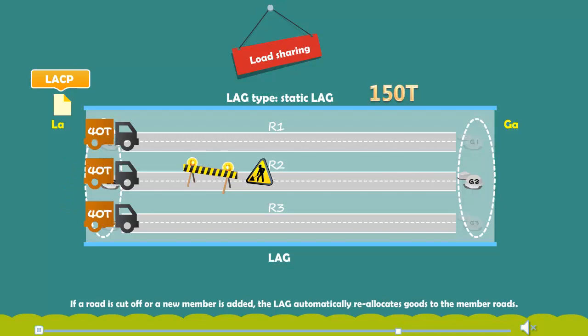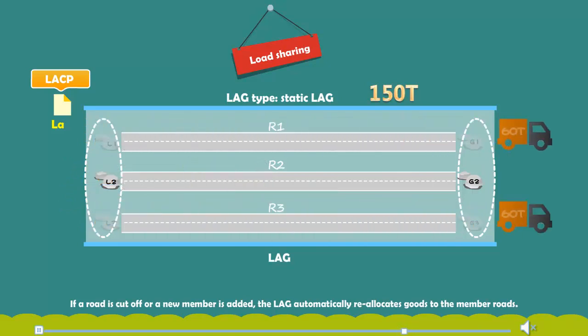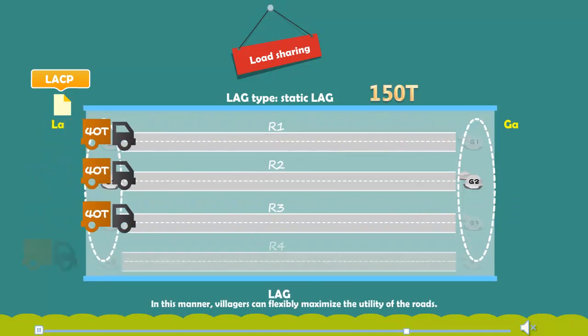If a road is cut off or a new member is added, the LAG automatically reallocates goods to the member roads. In this manner, villagers can flexibly maximize the utility of their roads.